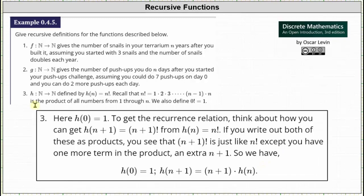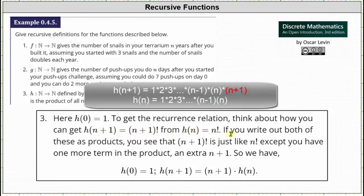For number three, the function h is defined by h(n) = n!. Recall that n! = 1 × 2 × 3 × … × (n−1) × n, the product of all numbers from 1 through n, and we define 0! = 1. So h(0) = 1. To get the recurrence relation, notice that h(n+1) = (n+1)! is just like h(n) = n! but with one extra factor of (n+1), giving us h(0) = 1 and h(n+1) = (n+1)·h(n).